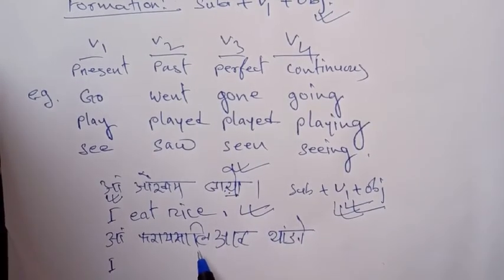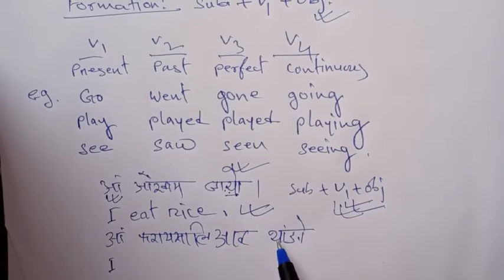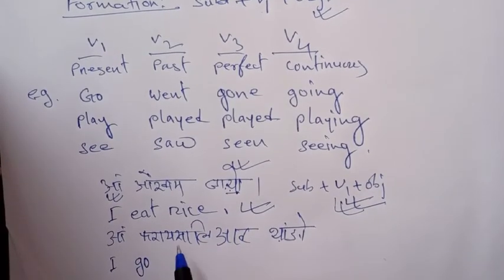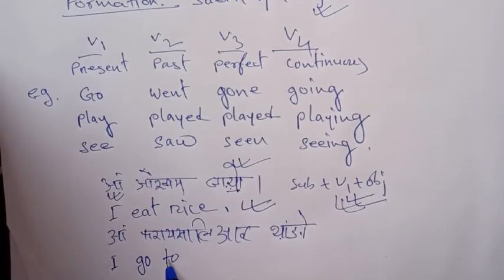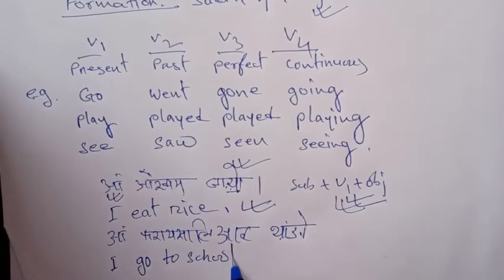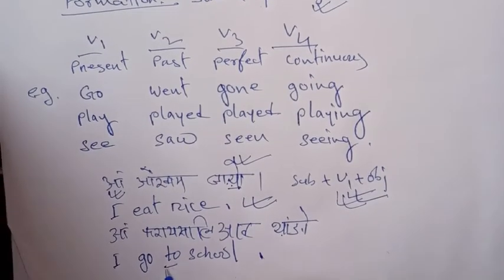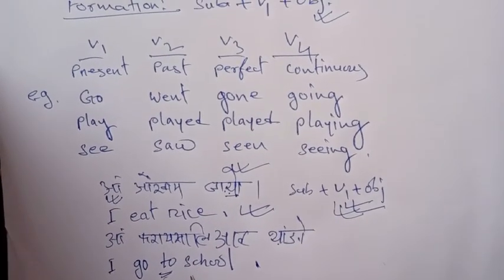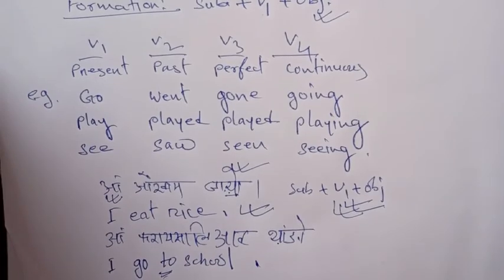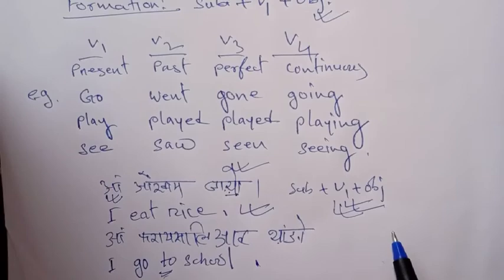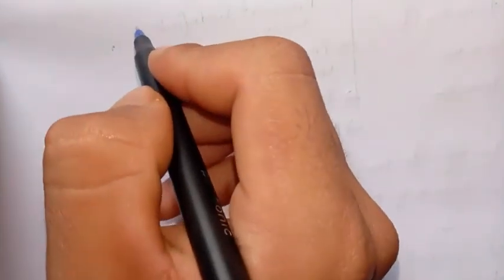If you start your school, you will want to learn more about school. Here we go — the simple example. The first step is to make a table of important things. The first step is to make a person table: the first person, the second person, and the third person. The number is the plural number and the singular number.